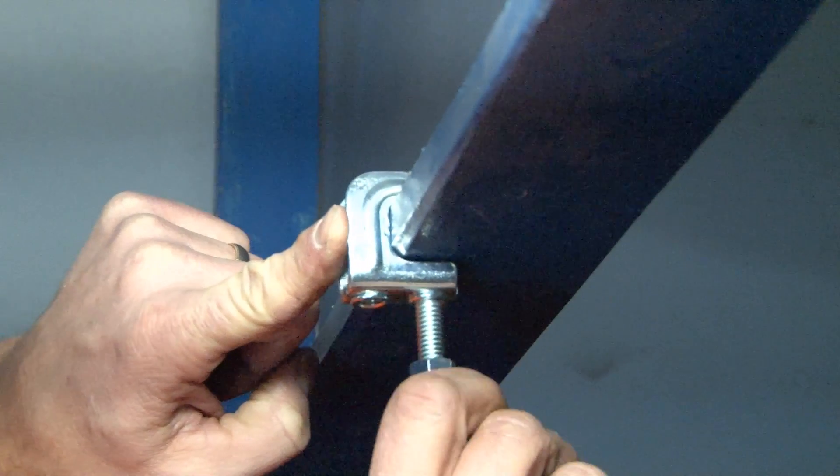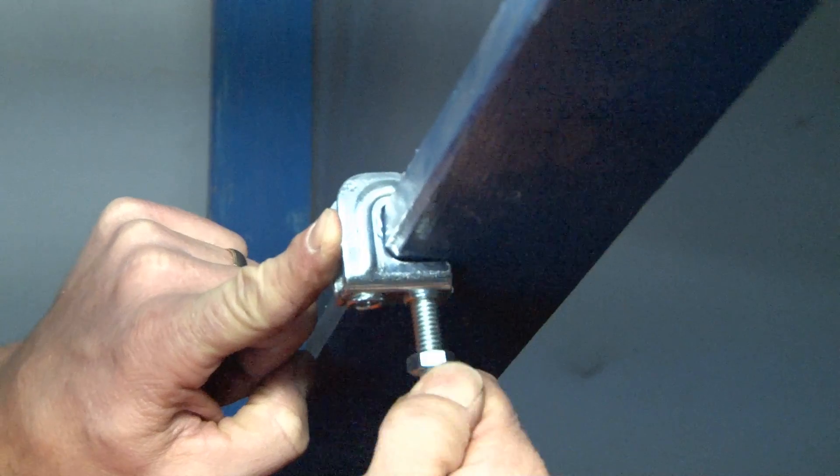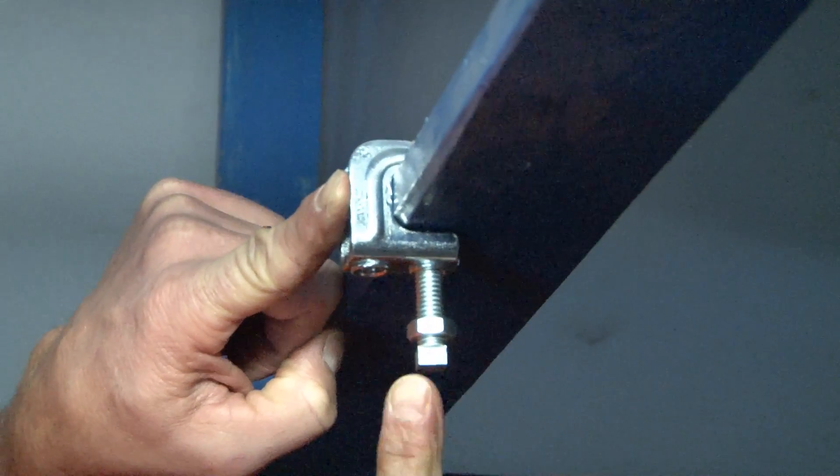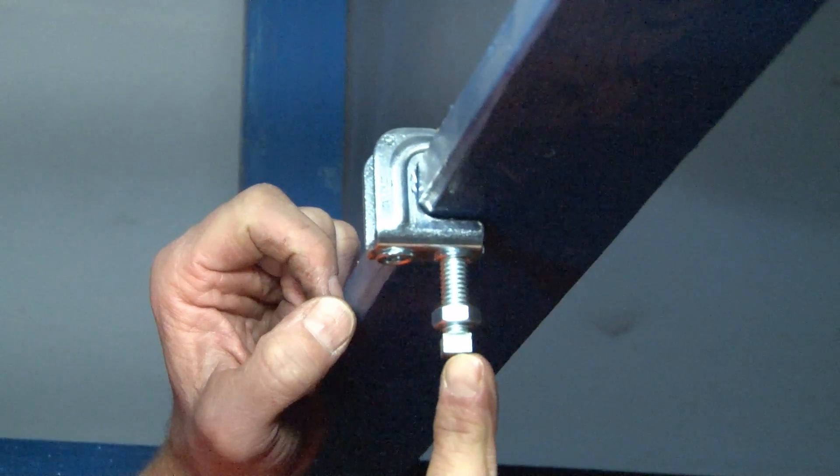You now take the set screw and tighten it to the bottom of the beam, securing it as tight as you can with a pair of channel locks or pliers.